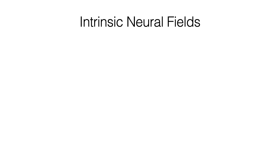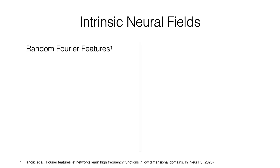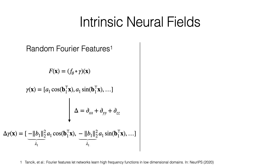Extrinsic neural fields do not directly use the x, y, z coordinates as the input to the MLP, but first transform them using sines and cosines of varying frequencies. This technique, called random Fourier features, allows the neural network to easily represent high-frequency details. We see that the sines and cosines are eigenfunctions of the Laplace operator in Euclidean space.